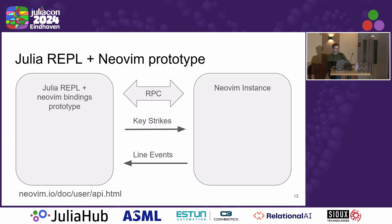I have been working on a prototype that does this for the Julia REPL and gotten some progress. There's still work to be done, but effectively this outlines what that looks like. You have the Julia REPL running on the one hand, a remote procedure channel talking to a NeoVim instance, and then communicating the text changes, the key strikes, and so forth. The documentation for this is at that URL.